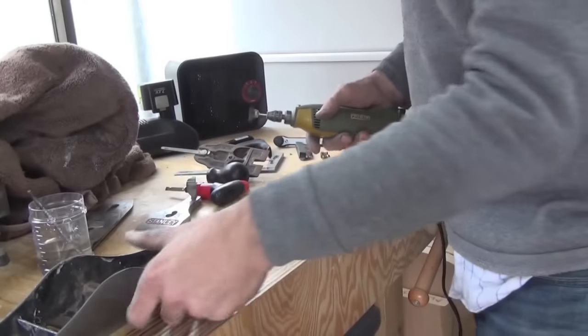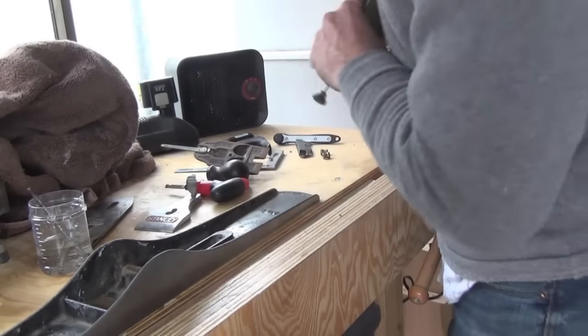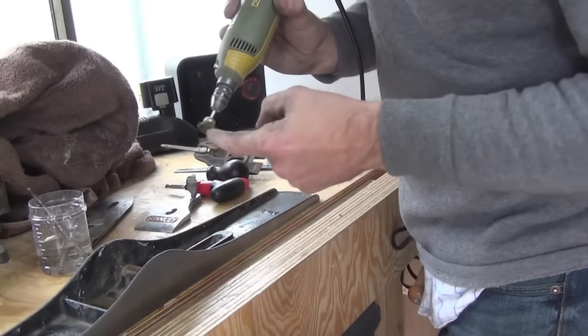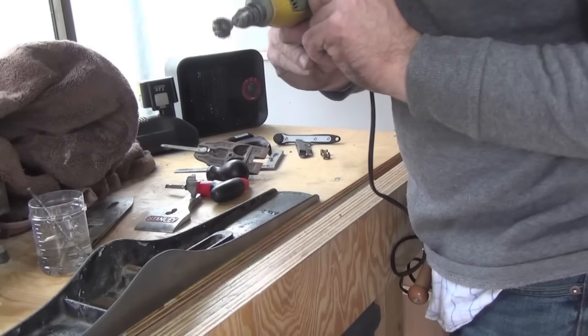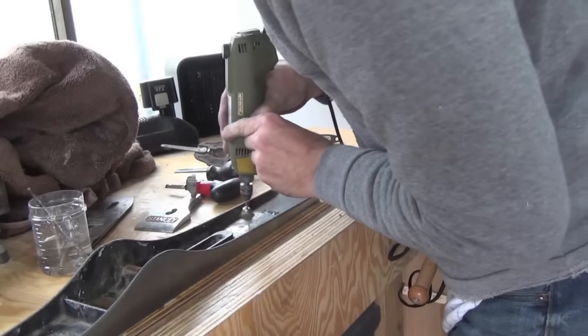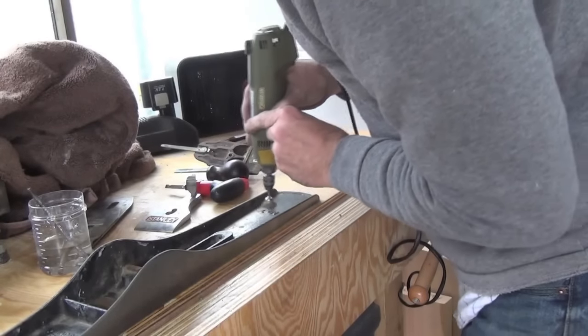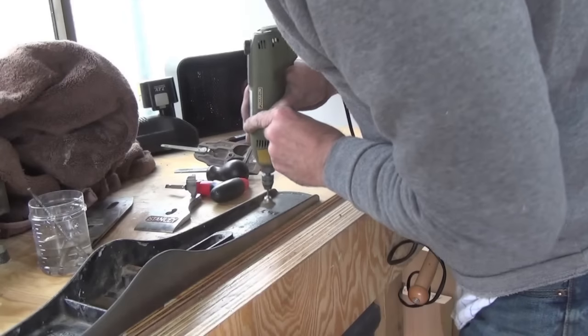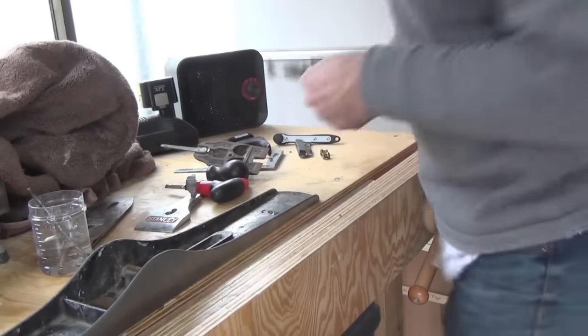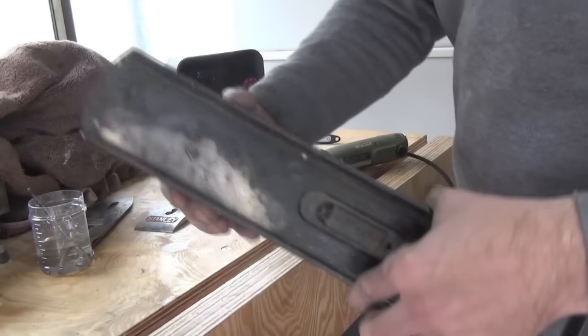But the body of the plane itself—there's quite a lot of rust in the bed. So what I'm going to do is clean it up using this rotary tool with a brass brush wheel. Using this, it's fairly easy to get back to raw metal. You can see that now.